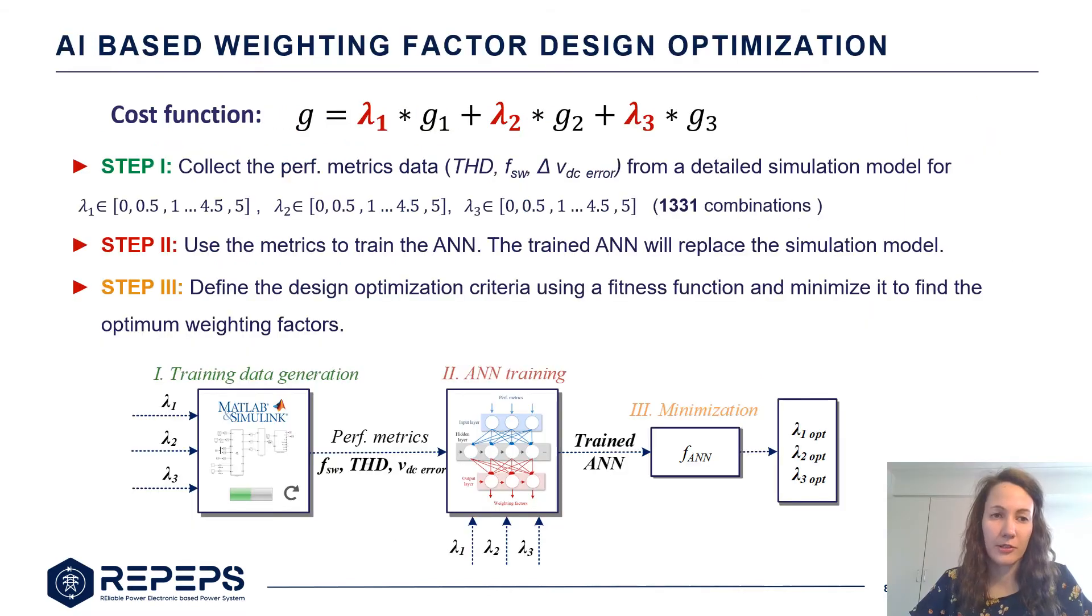So let's look first at AI-based weighting factor design optimization. The control objectives of MPC are typically structured in the shape of a cost function. We have different objectives and each of them is paired with a weighting factor. The weighting factor defines how important each objective is.